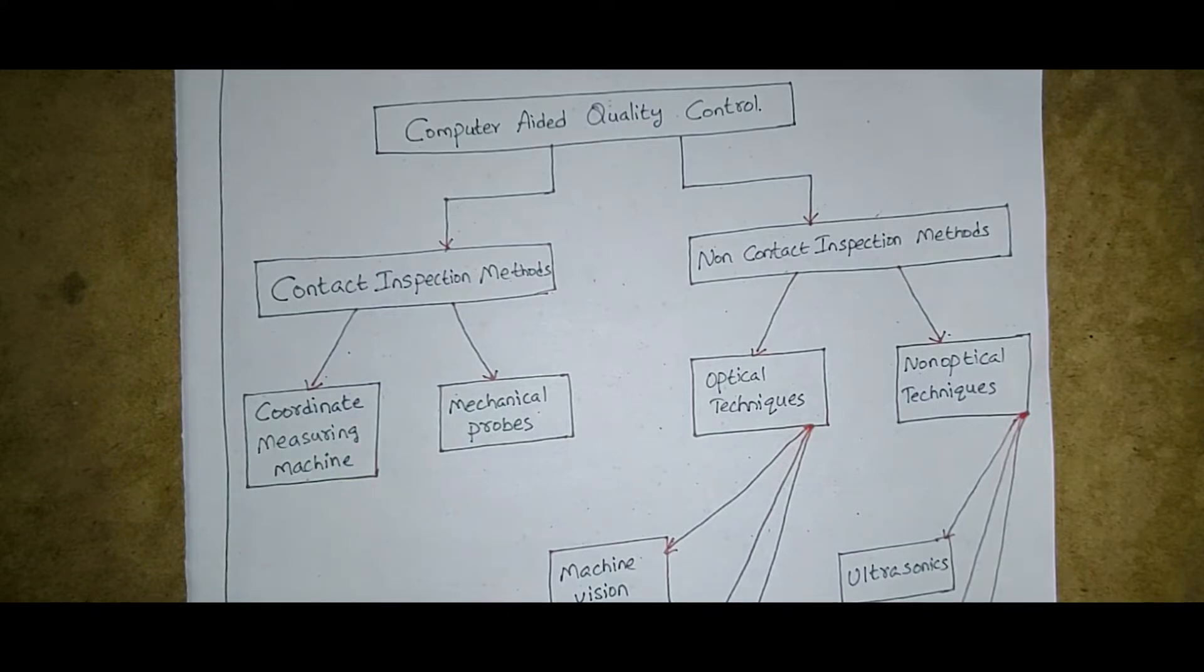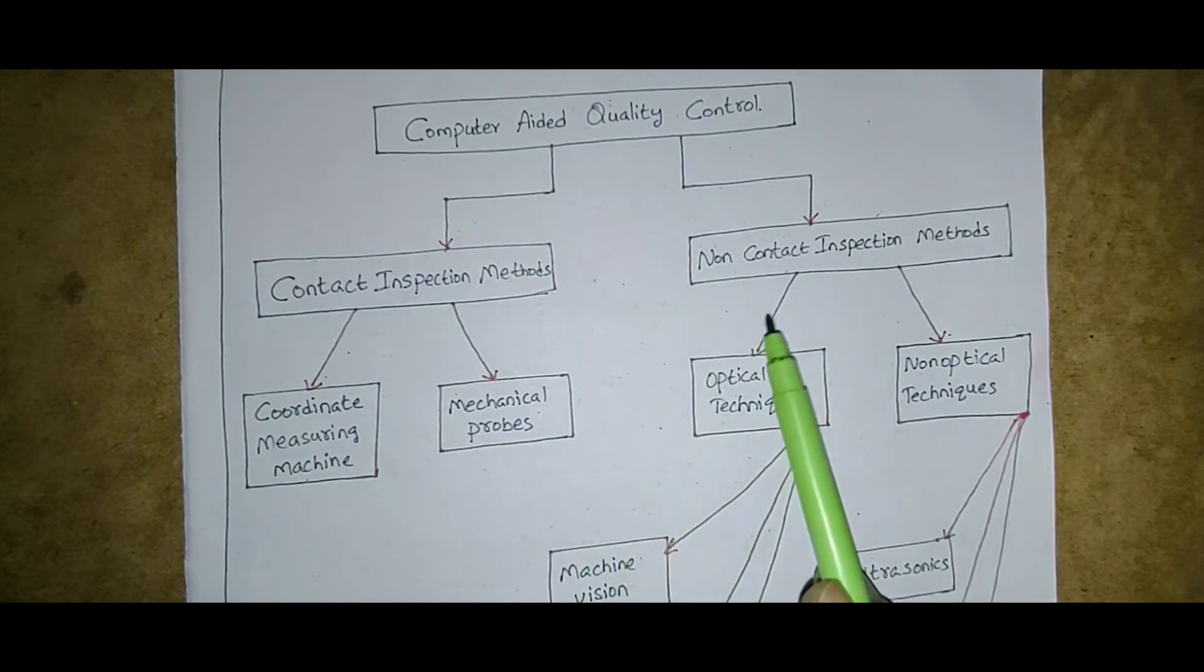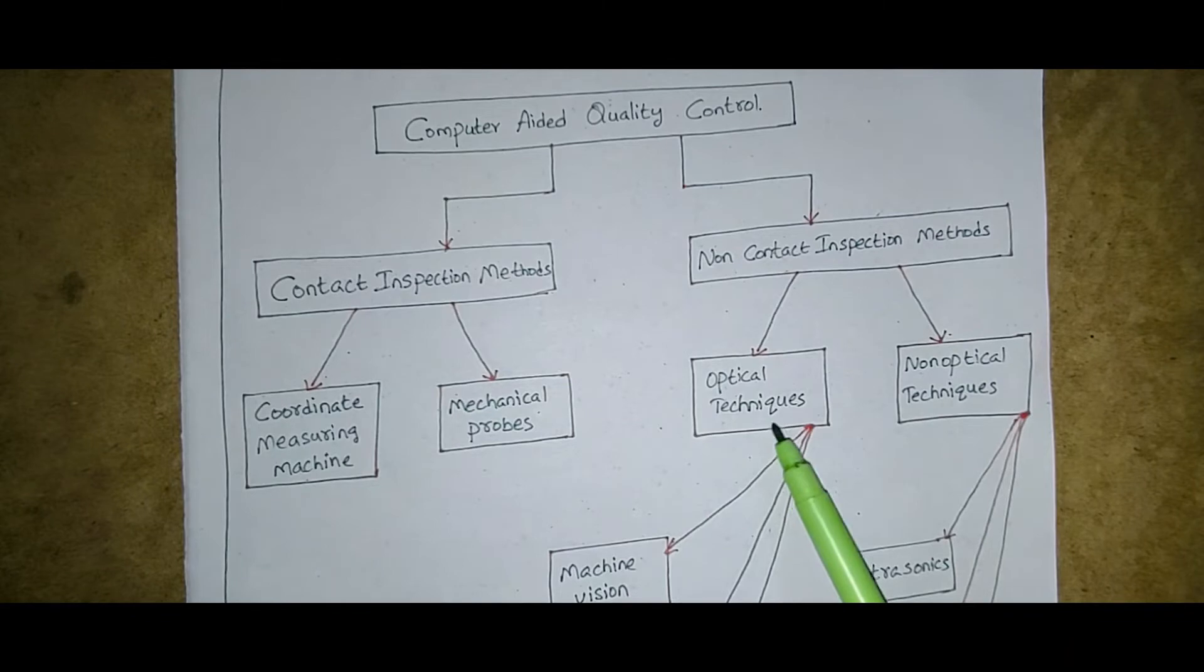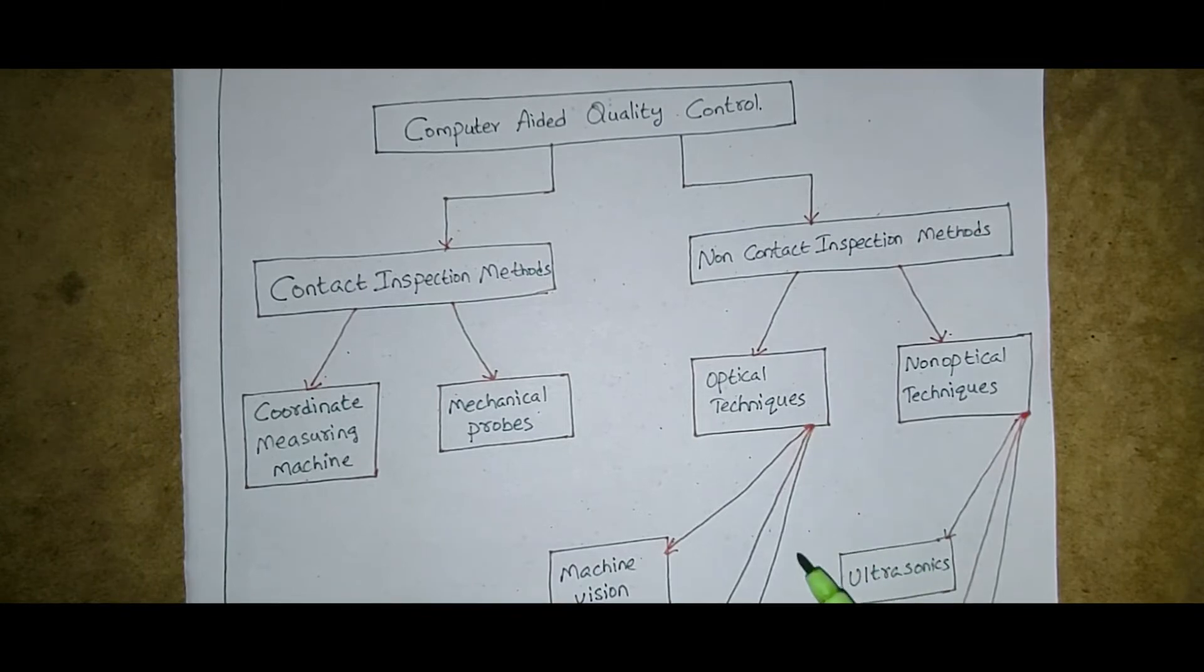The second is mechanical probes. Whereas non-contact inspection methods is of two types: first is the optical techniques, and second is the non-optical techniques.